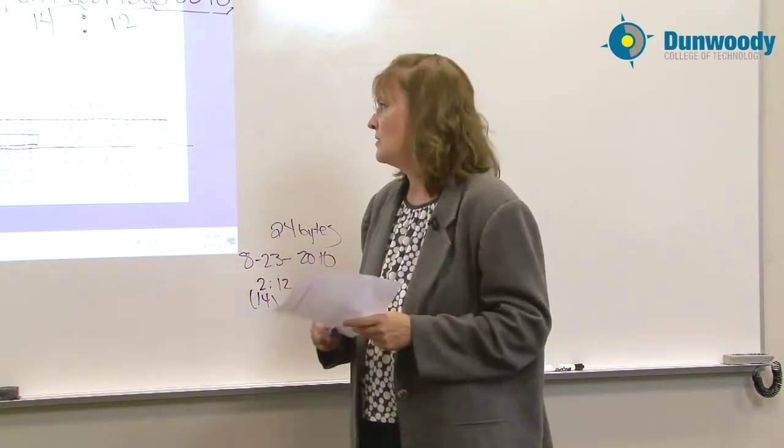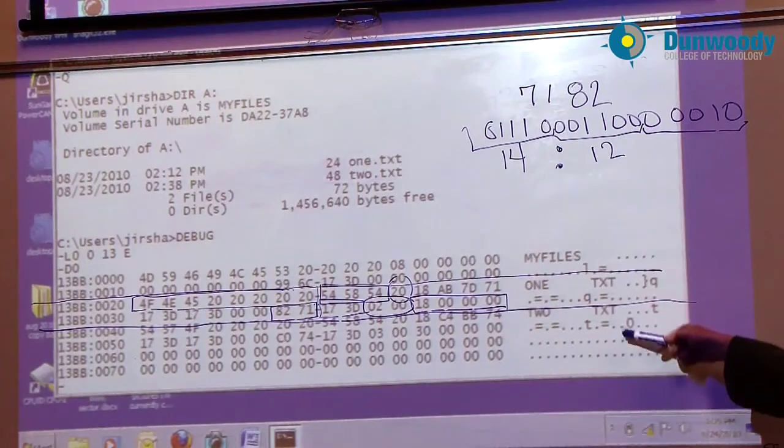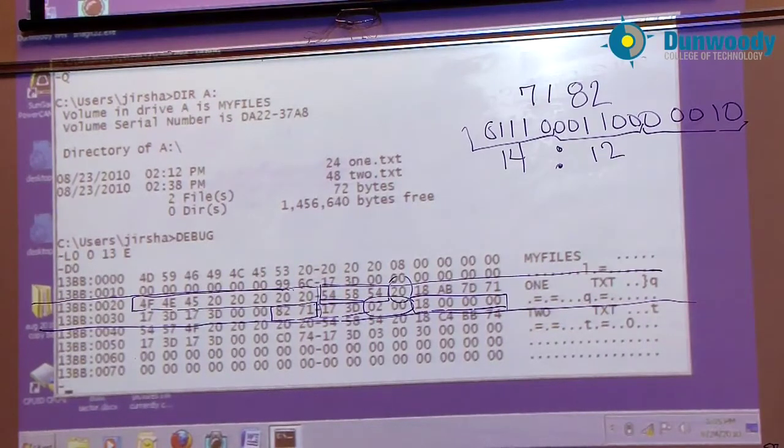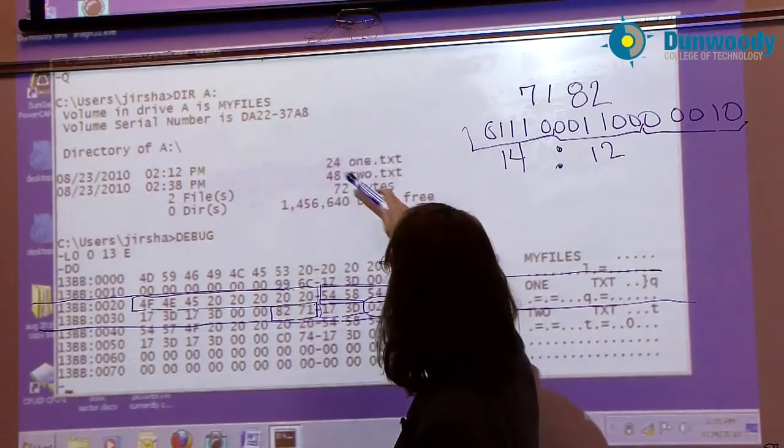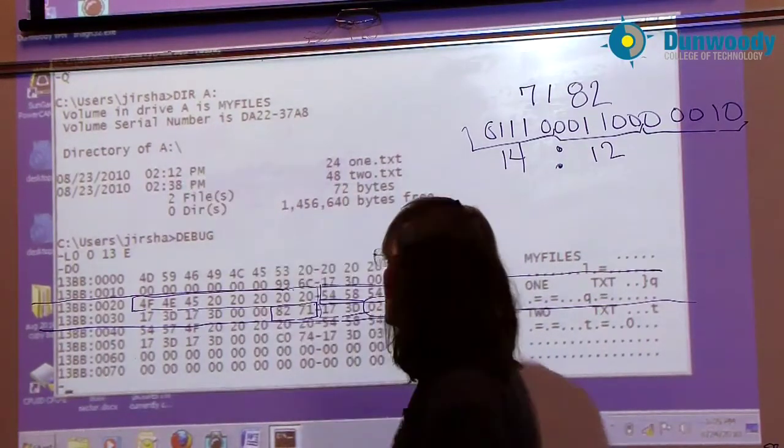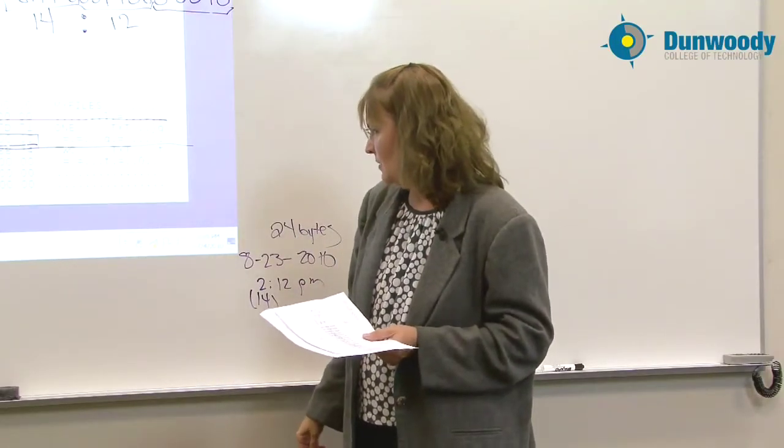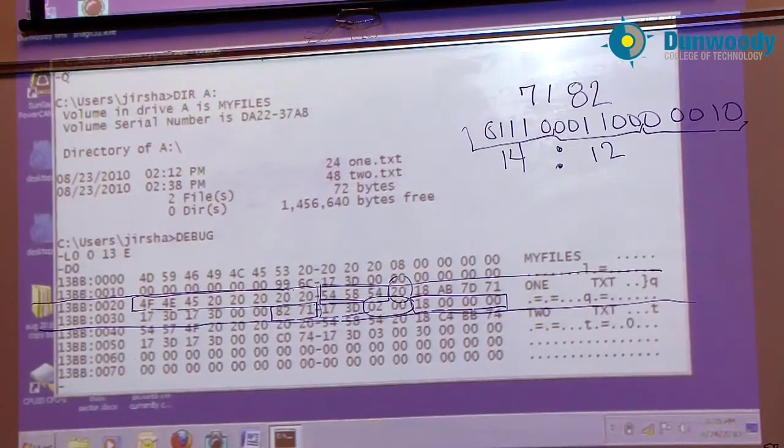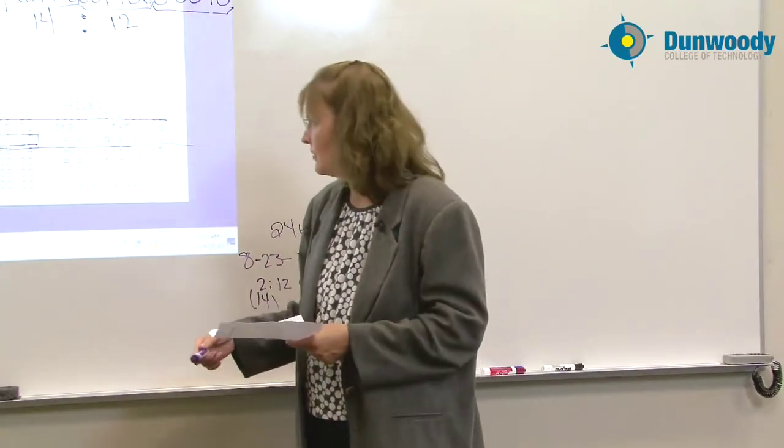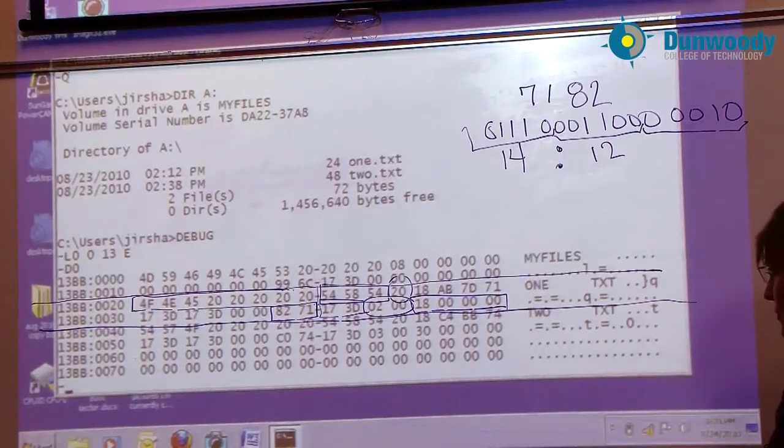And then following the file allocation table, this root directory table, which we have three entries in, one for the volume label and one for the two files that I created after the format, which we can see a lot of the contents of the root directory table if we use DOS's DIR command. And what will follow the root directory table, there's a lot of unused space in the root directory table waiting for files to go into it, is the actual data portion itself.